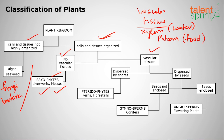If vascular tissues are present, there is further classification based on whether plants are dispersed by spores or seeds. Spores are small dot-like structures — for example, fungi attack bread mold and multiply through spore formation. Plants dispersed by spores are called pteridophytes, with ferns and horsetails as examples.